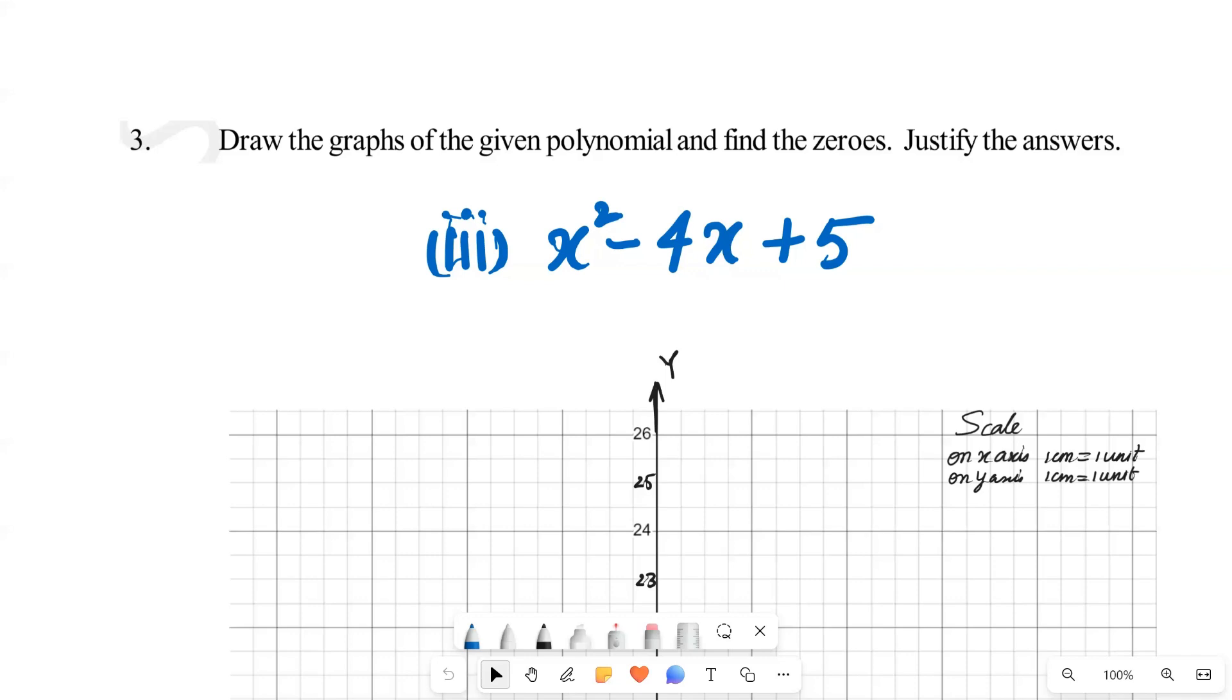Hi guys, Sagar here. Hope you understood the previous one. Today we have the third question of exercise 3.2. We have to draw the graph of x² - 4x + 5 to find its zeros and justify the answers.